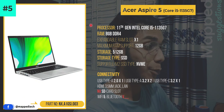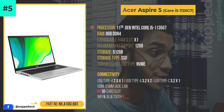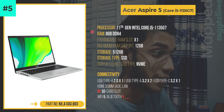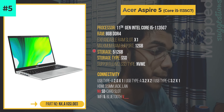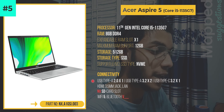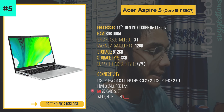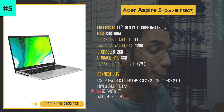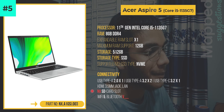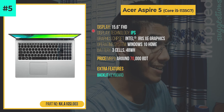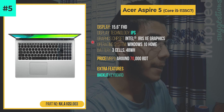The processor is the 11th generation Intel Core i5 — to get this one, the storage of the Aspire 5 will be NVMe SSD. For connectivity, I'll mention that it has a card slot. It comes in a 15.6 inch full HD display for the price.